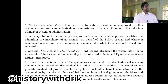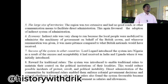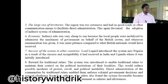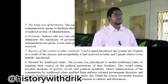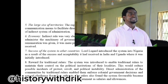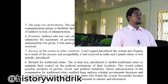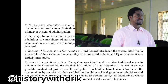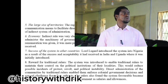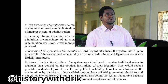Point number six is the economy. Indirect rule was very cheap to run because local people were mobilized to administer the machinery of government on behalf of the British crown, and wherever remuneration was given, it was mere pittance compared to what British nationals would have received. Point number seven was the success of the system in other countries — Lord Lugard had introduced the system into Nigeria as a result of the success it had received in India and Uganda. Point number eight was that the system was introduced to enable traditional rulers to maintain their control in the political areas.